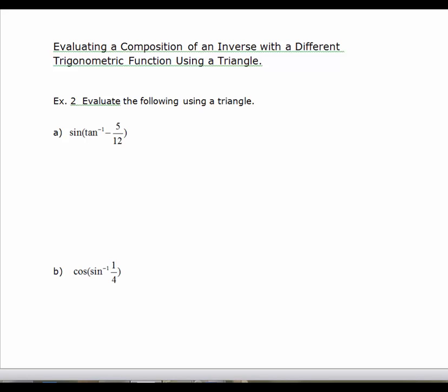So we start with the sine of the inverse tangent of negative 5 twelfths. And remember, inverse tangent means the angle whose tangent is. So we're going to start off by letting theta equal the angle whose tangent is negative 5 twelfths.